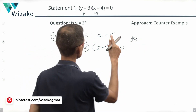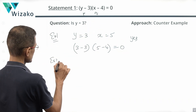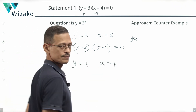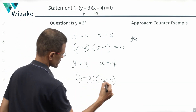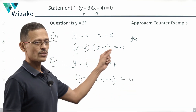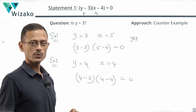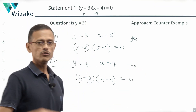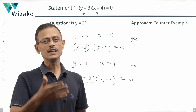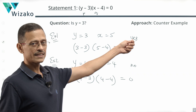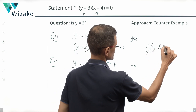Now the counterexample: y = 4, x = 4. Plugging in: (4 − 3)(4 − 4) = 1 × 0 = 0. The product is still 0, because one of the factors is 0 — it is not necessary that both be zero. In this example, is y equal to 3? The answer is no. So if (y − 3)(x − 4) = 0, must y be 3? Not necessarily. Can y be 3? Yes. We do not have a definite answer, so Statement 1 alone is not sufficient. Rule out answer options A and D.